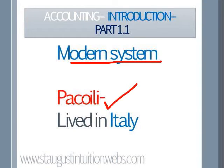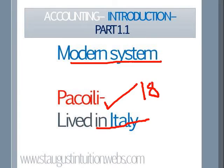The modern system of accounting has its origin from Pacioli, who lived in Italy. He is a mathematician, a teacher, a lecturer. He created the modern system of accounting. He lived in Italy in the 15th century.